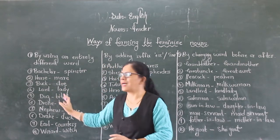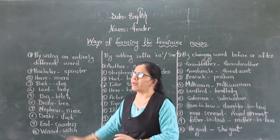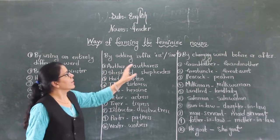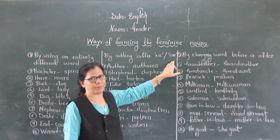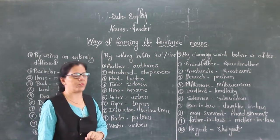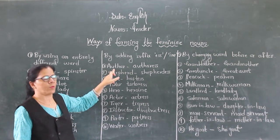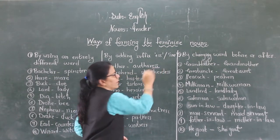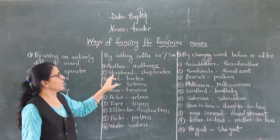The second way is by adding the suffix -ess. So this is the second way of forming feminine nouns. For example, author — authoress. We have added -ess. Shepherd, shepherdess — shepherd means one who looks after the sheep.